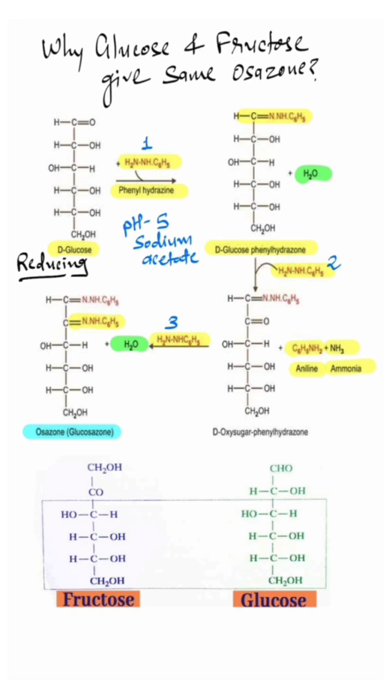Now look at the structures of glucose and fructose. They differ only at first and second carbon atoms. And phenylhydrazine binds to first and second carbon atoms masking the difference around these two. Rest structures are similar. So glucose and fructose both give same osazone.